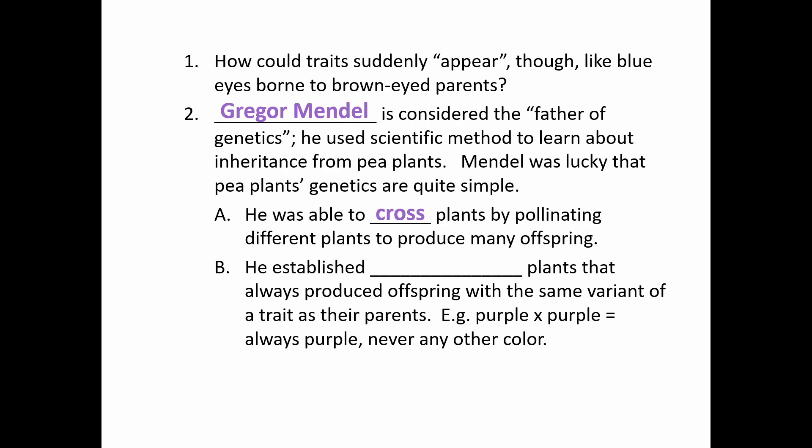He established true breeding plants that always produced offspring with the same variant. So he would basically breed purple-flowered pea plants over and over again until the offspring were always purple and no other colors like white would pop up. He produced these true breeding plants for things like flower color, seed shape, and plant height, and then would cross two individuals together who had different traits.